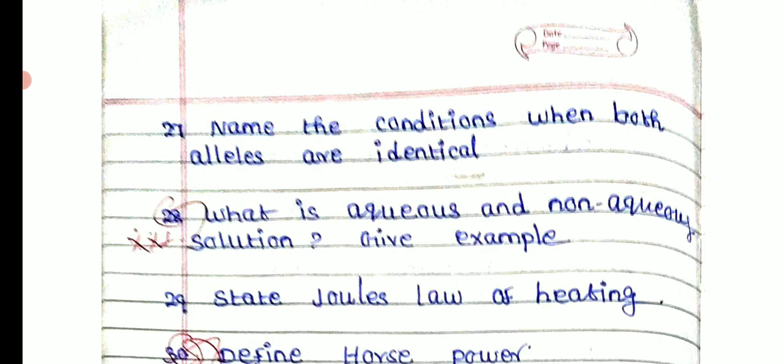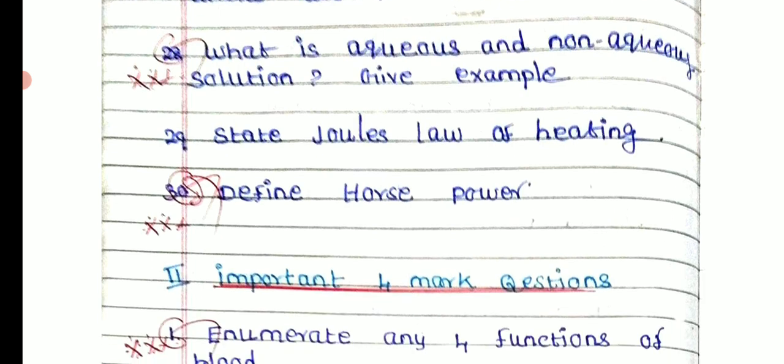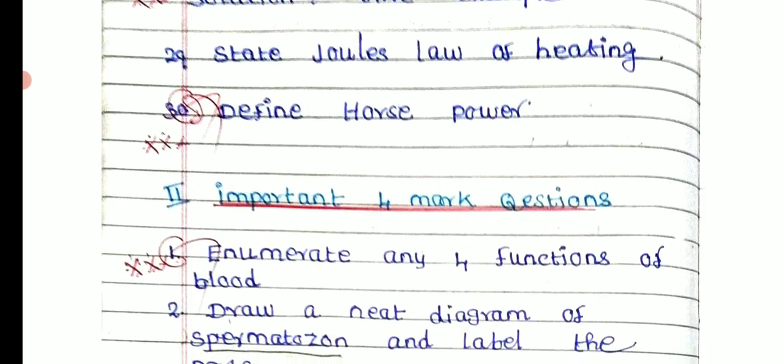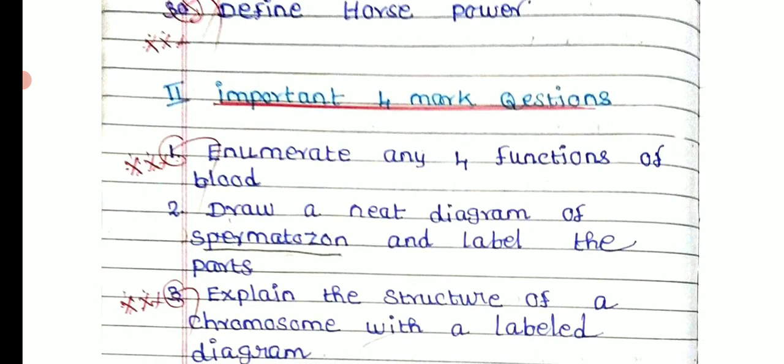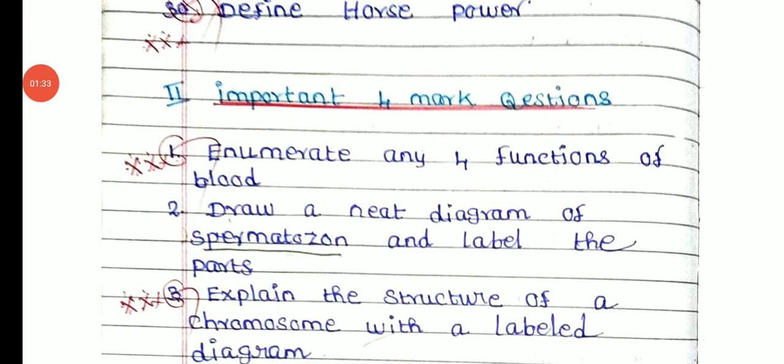What is aqueous and non-aqueous solution? Give an example. State Joule's law of heating. Define horse power — at the important form. Enumerate any four functions of blood.